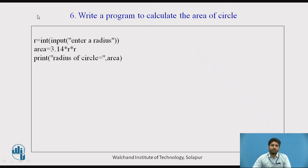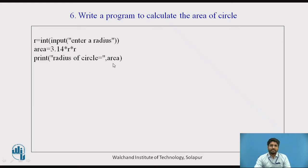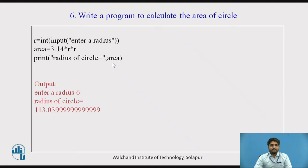In simple terms, you need only one variable — r, the radius. Enter the radius; area would be pi × r squared, and the pi value is 3.14, already written in the program. If the user enters 6, the radius of the circle is 6, and the area of the circle would be 113.03999.